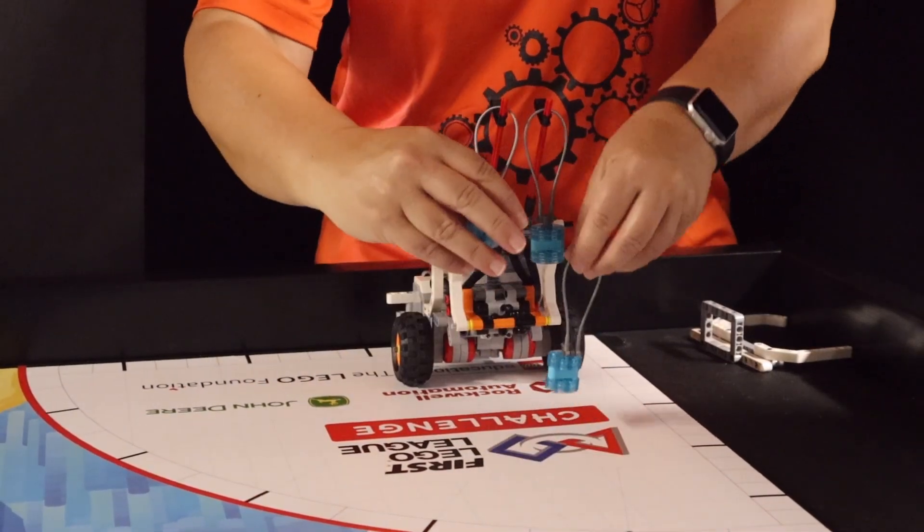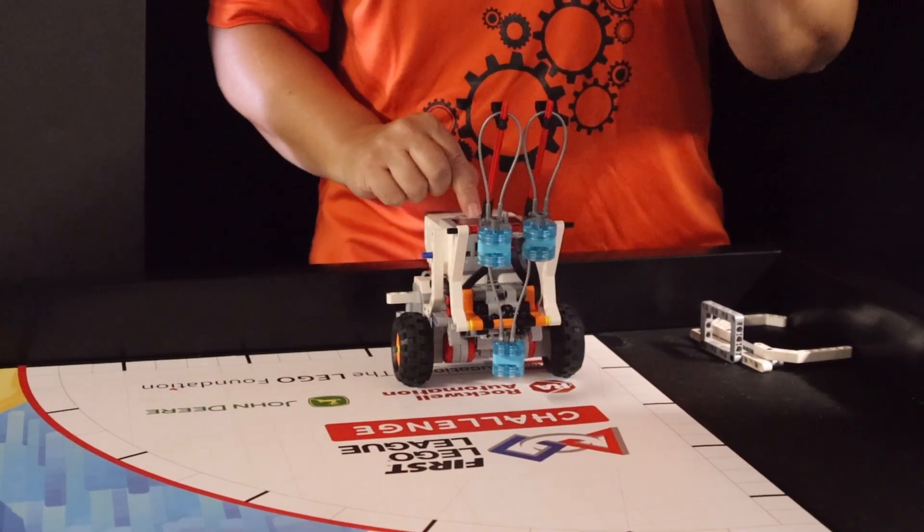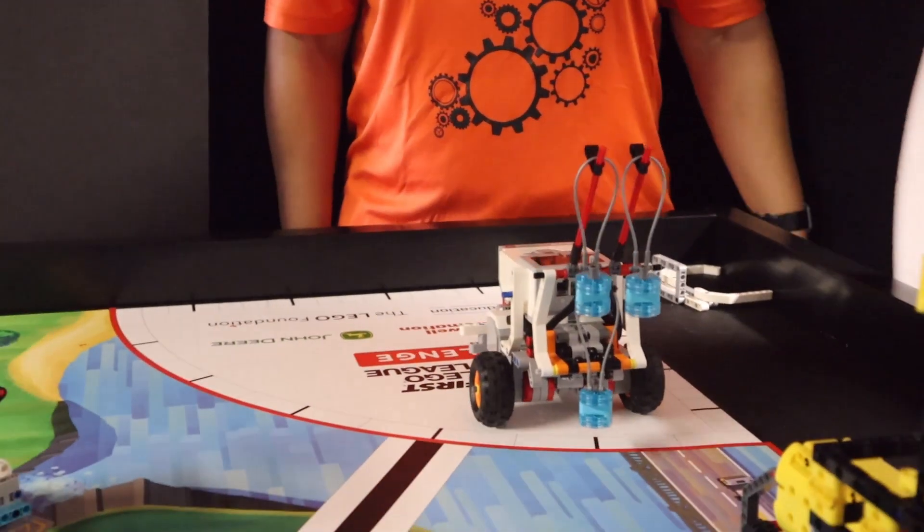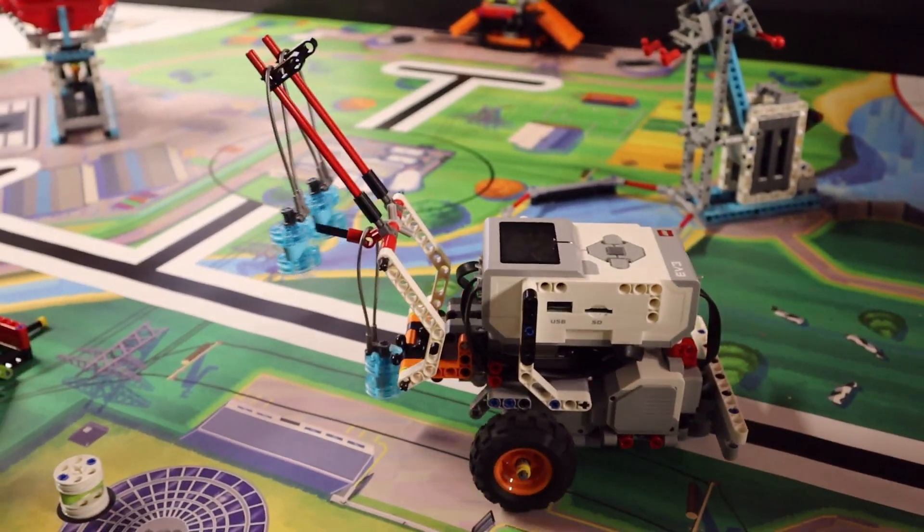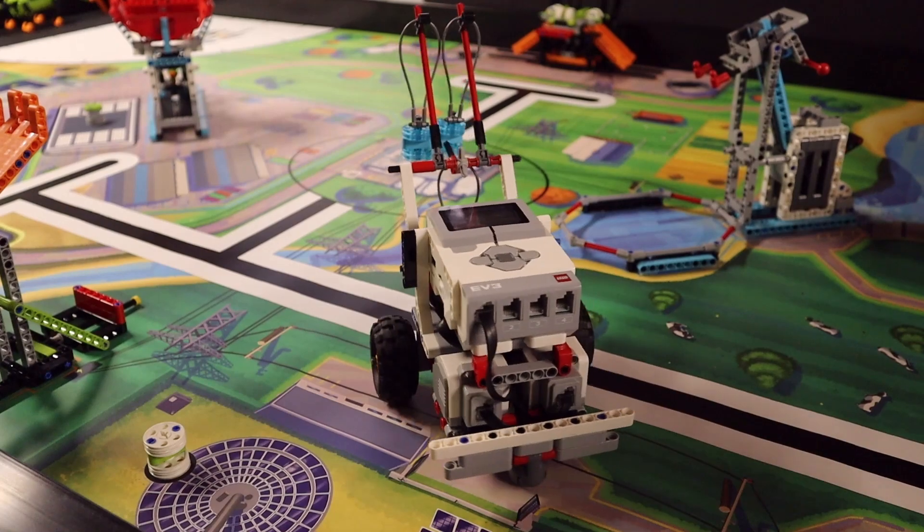To hang the looped water units onto the hook, the robot slightly lowers its attachment and then drives backwards to pull them out. As the attachment is lowered, the third water unit falls off its hook and onto the mat inside the water reservoir circle.